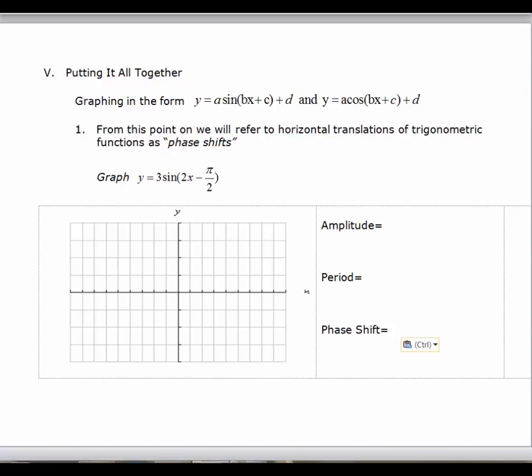In these last two examples, we're going to basically take all the information and put it together in one problem. So we want to graph y equals 3 sine 2x minus pi over 2.